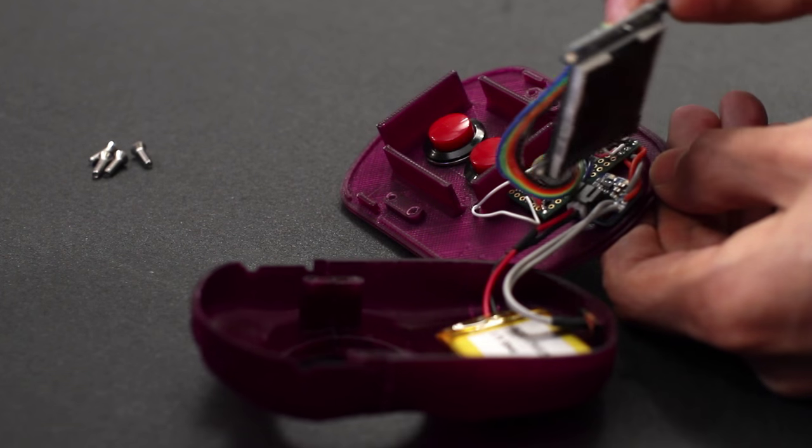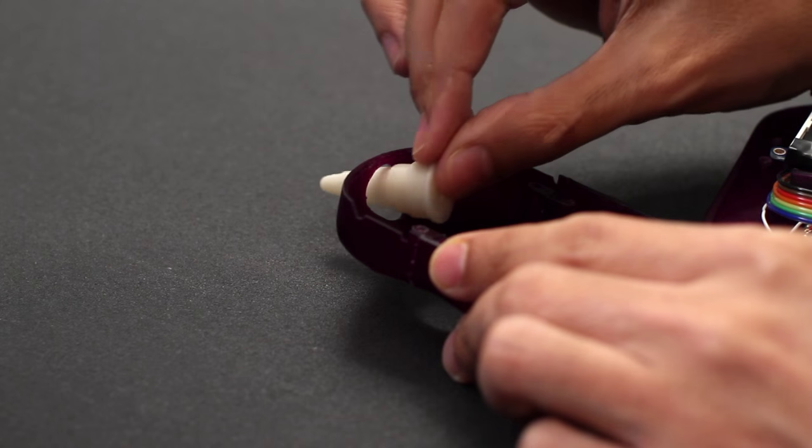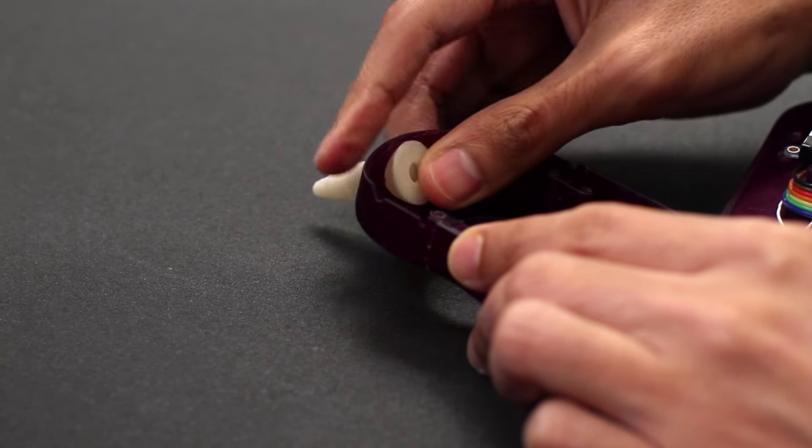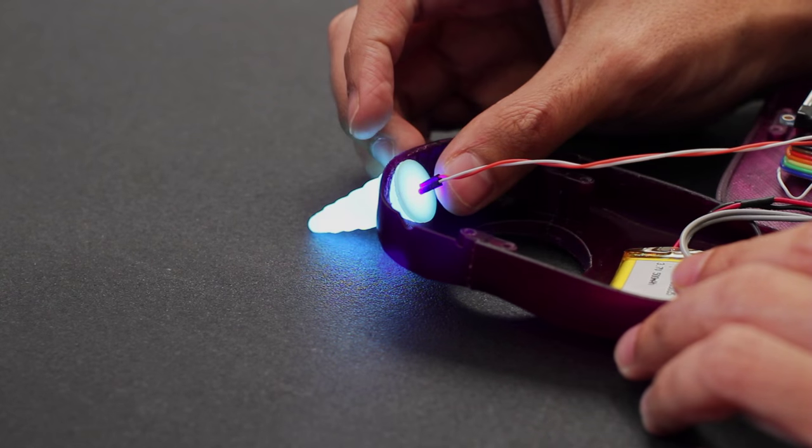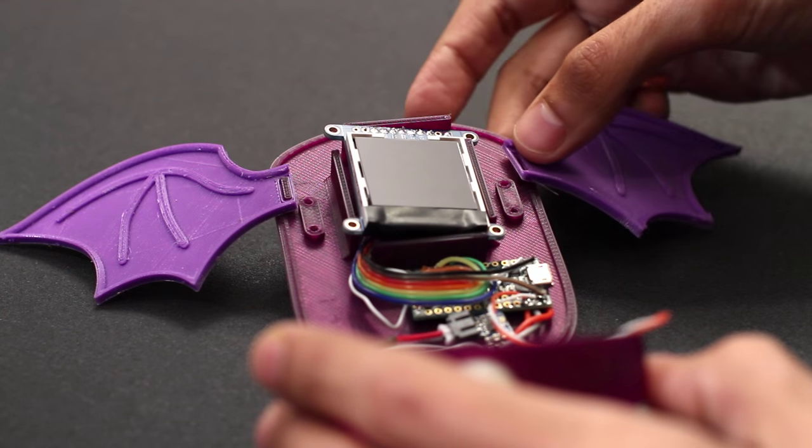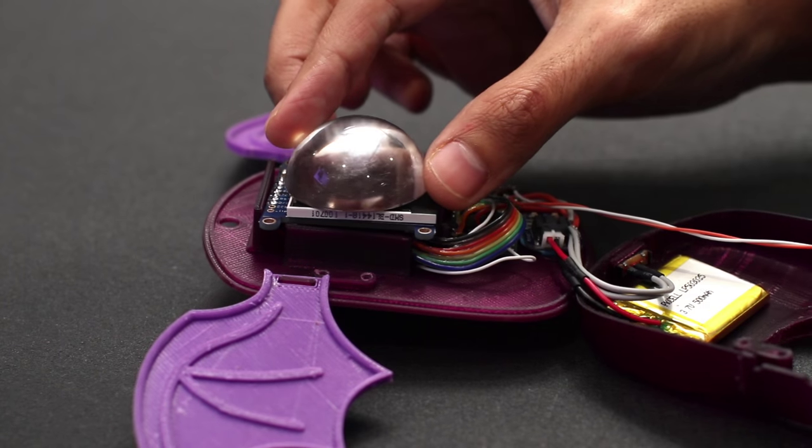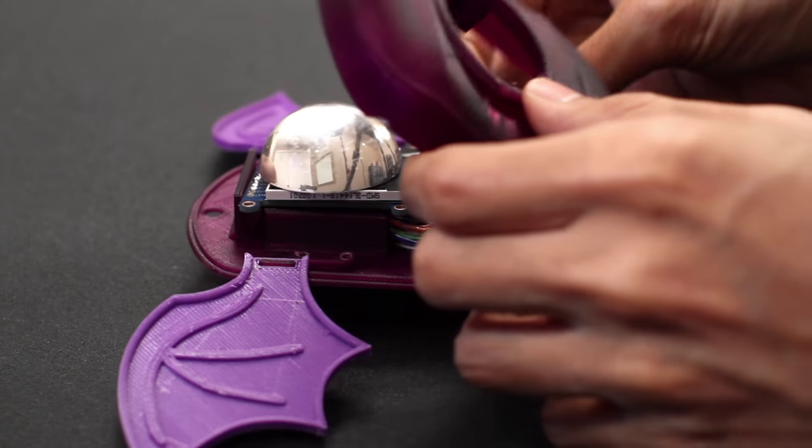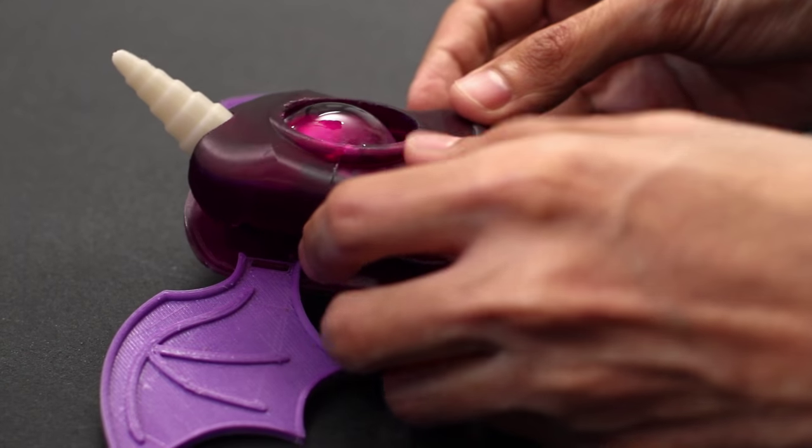Place the display over the two push buttons. Insert the unicorn horn through the hole on top of the face piece. Fit the UV LED into the opening of the horn and glue it in place. Lay the wings over the side of the panel and press them down. An acrylic cabochon rests over the display and is held in place when the two parts are joined together.